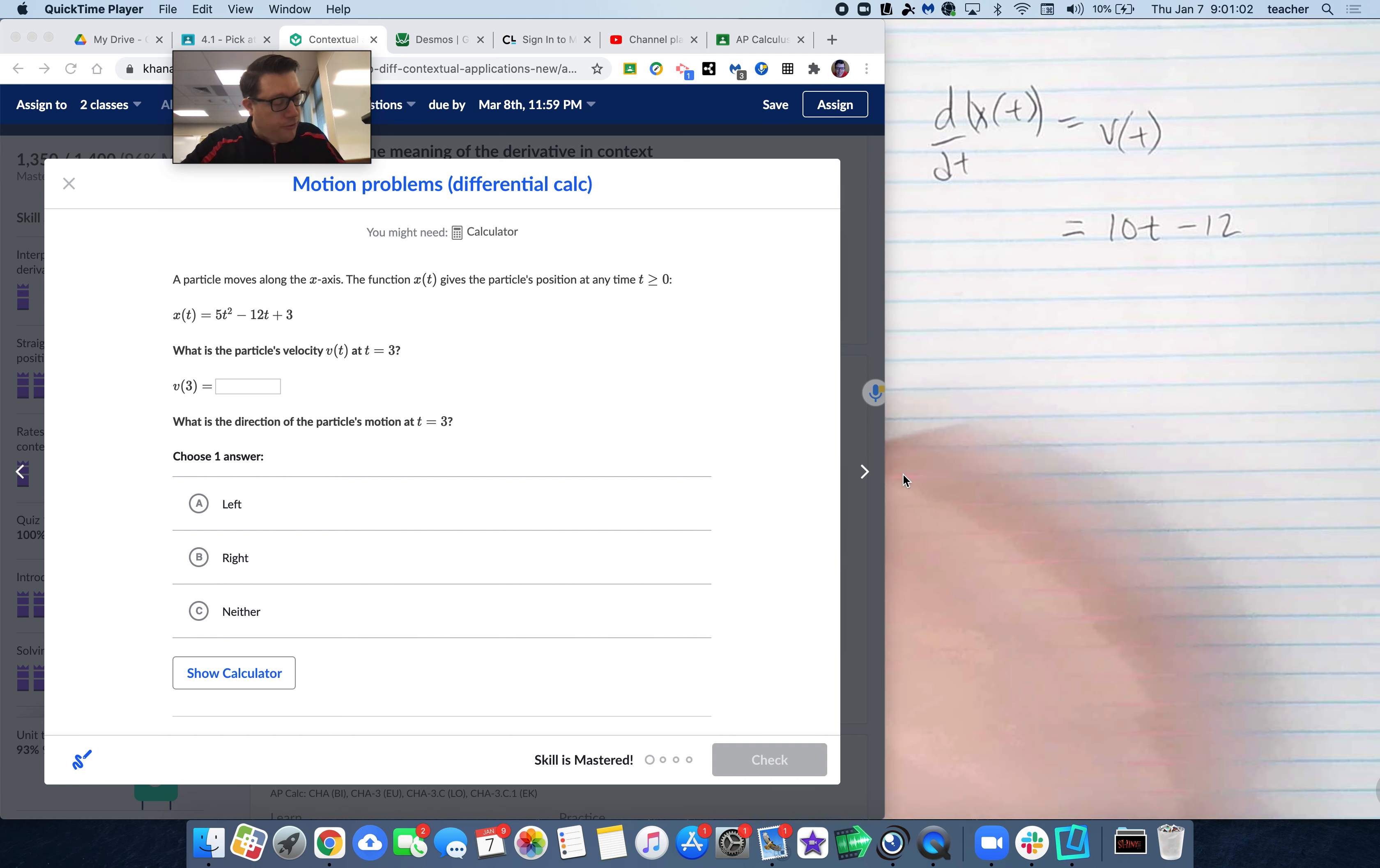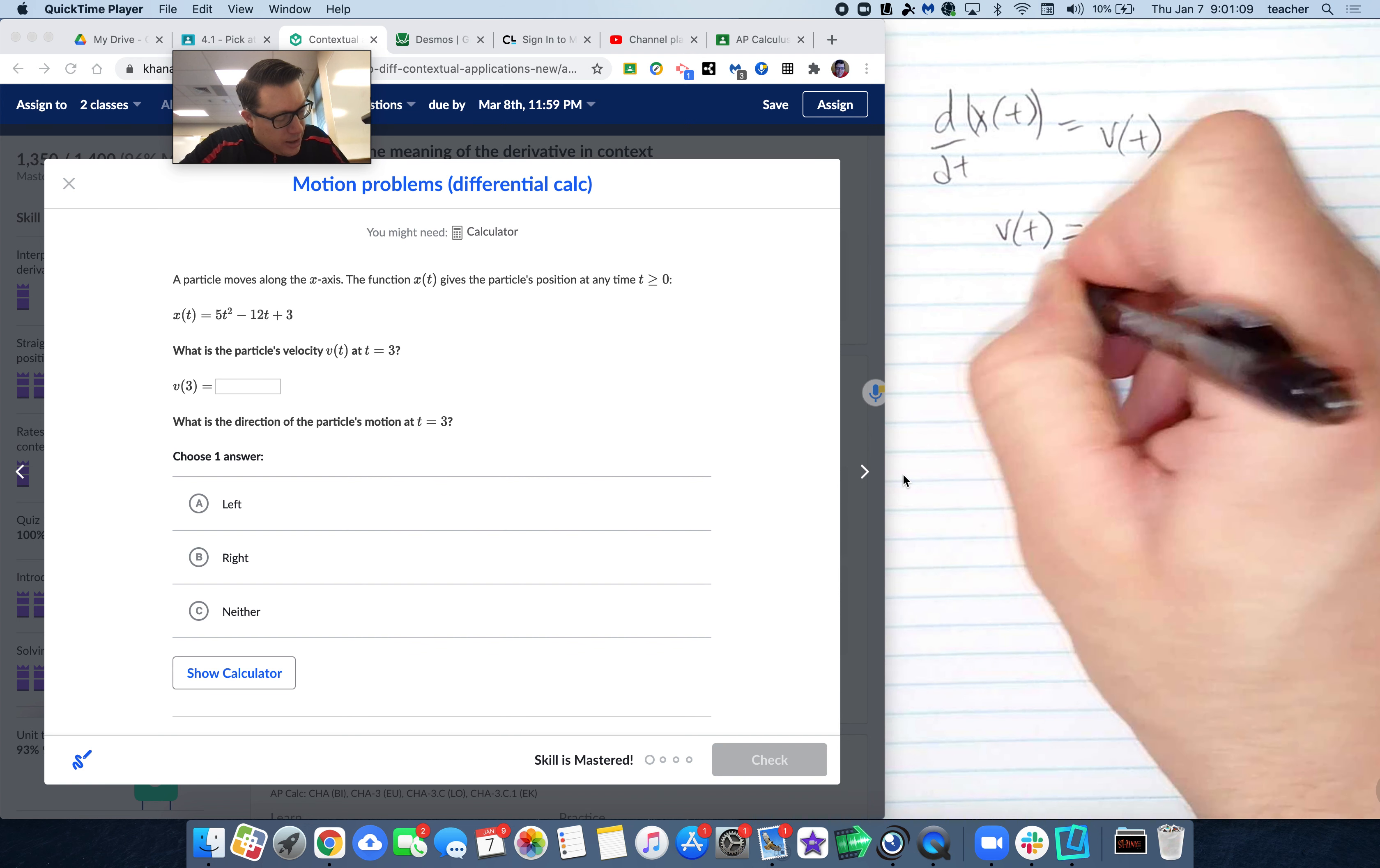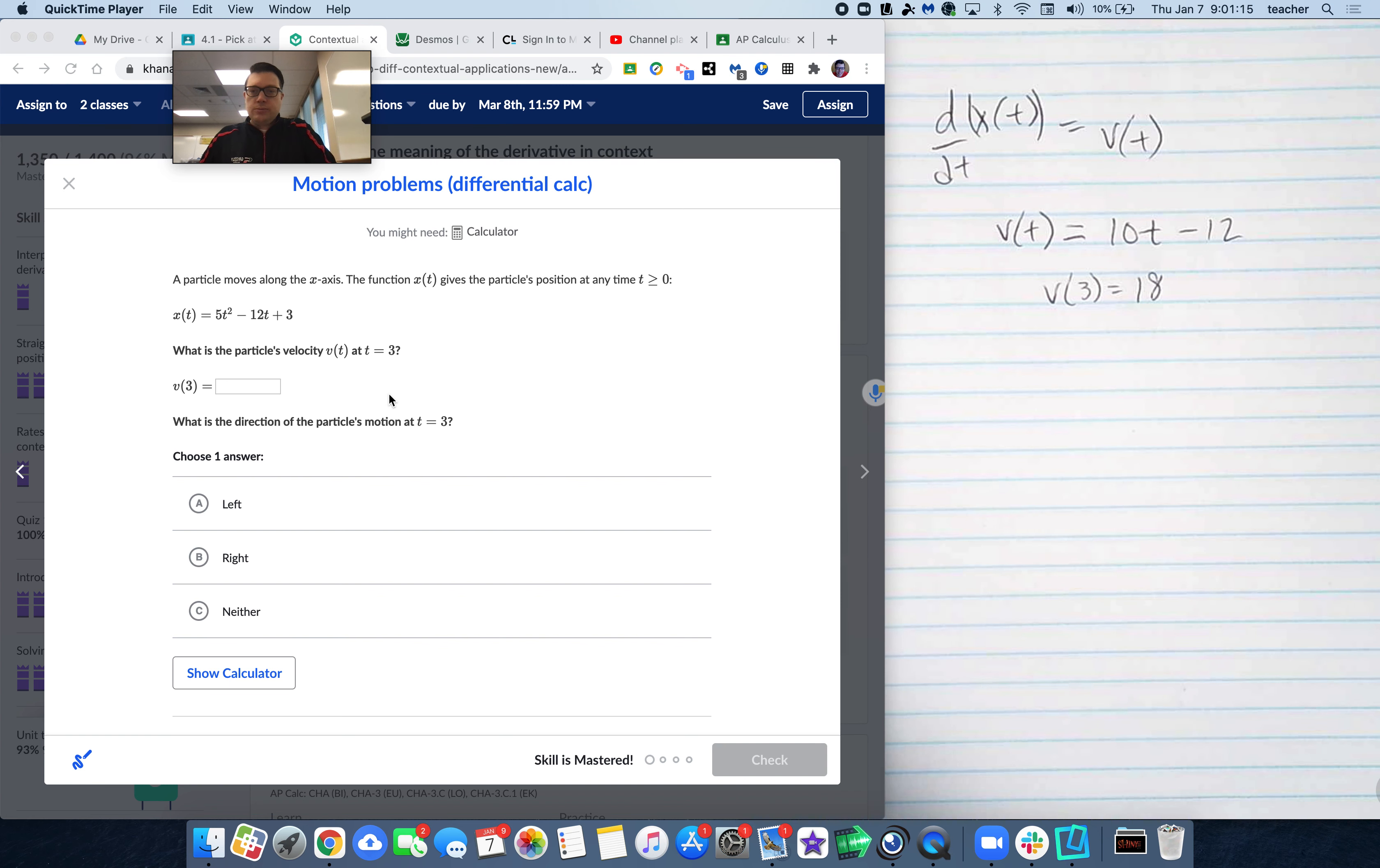So what we're really looking for is that if this is the velocity function, what is its value at t equals 3, as in the velocity of 3 is 30 minus 12, which is 18. So I'm going to record that result.